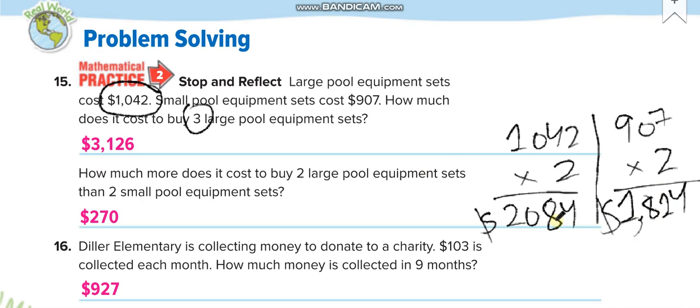Then you will subtract 1,814 from 2,084. So 2,084 minus 1,814. Sorry, it's not 1,824, it's 1,814. So 2,084 minus 1,814 equals 270 dollars.